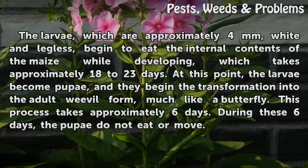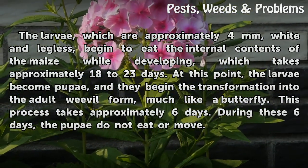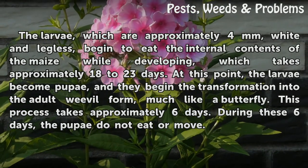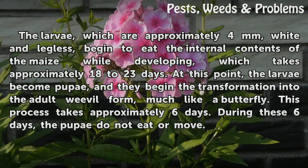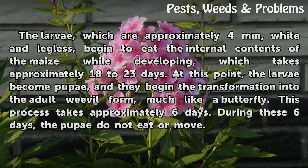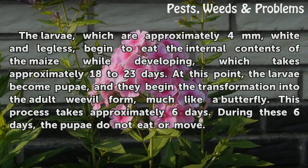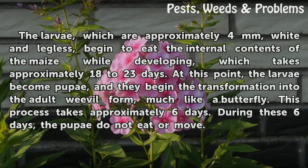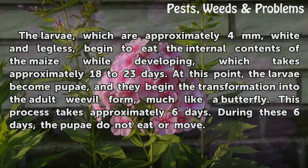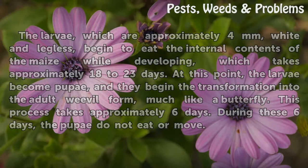The larvae, which are approximately four millimeters, white and legless, begin to eat the internal contents of the maize while developing, which takes approximately 18 to 23 days. At this point, the larvae become pupae and begin the transformation into the adult weevil form, much like a butterfly. This process takes approximately six days, during which the pupae do not eat or move.